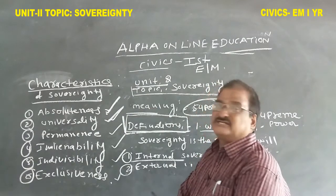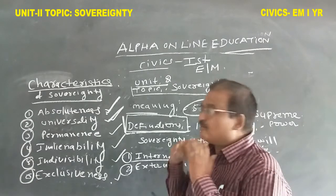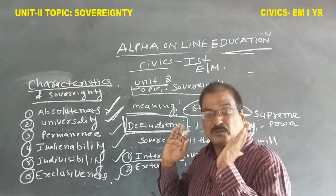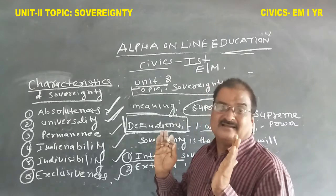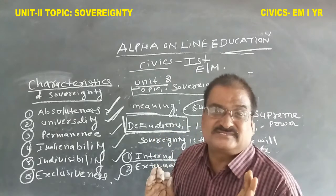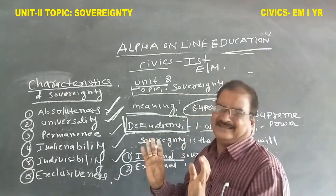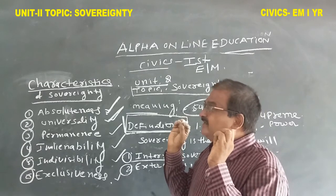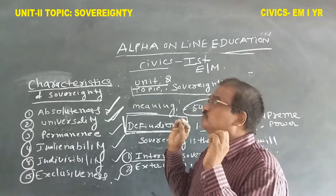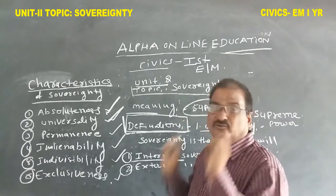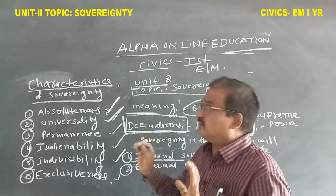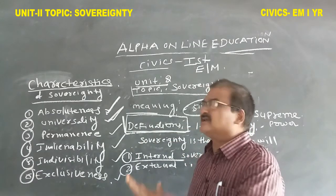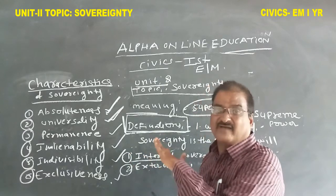Absoluteness means the sovereignty is absolute and compulsory — no one can override it. Every state creates its sovereignty with absoluteness. Absolute means it is compulsory and original. No exemption is given to any person or institution; all are under the control of this sovereignty.